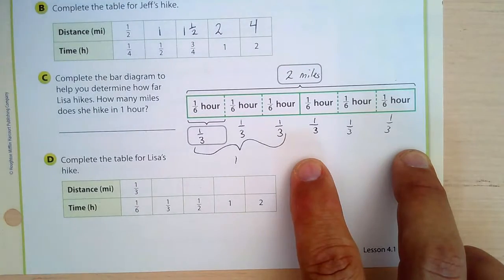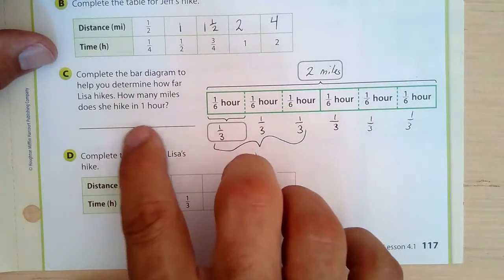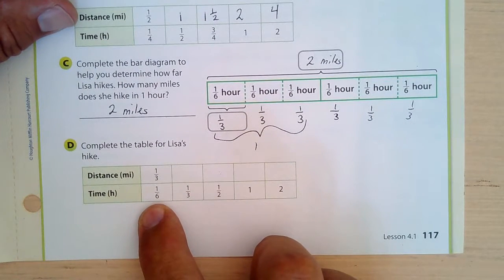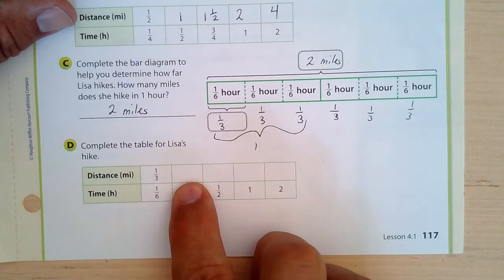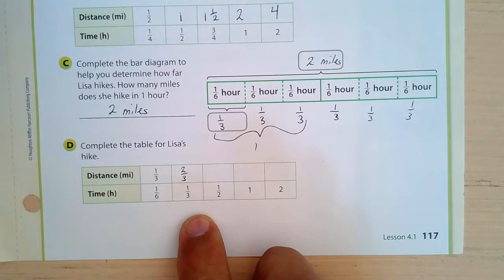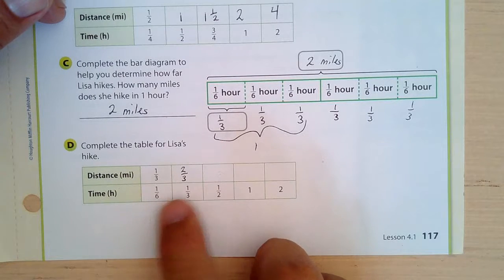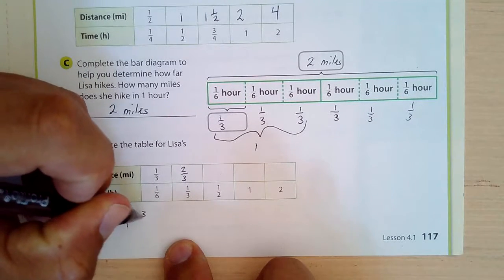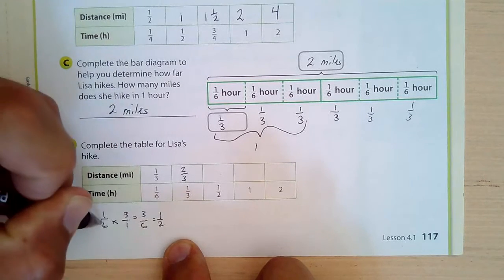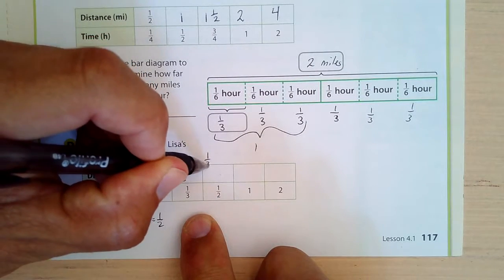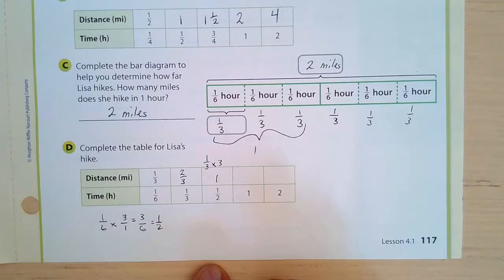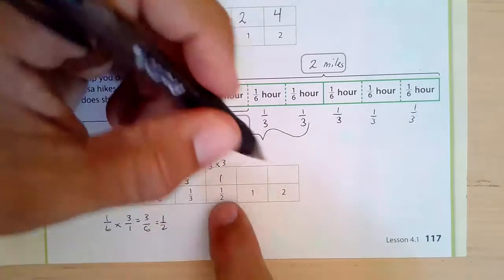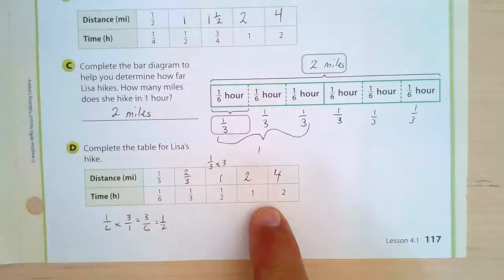Completing Lisa's table: one-sixth of an hour is one-third of a mile. Doubling gives two-sixths — one-third — and two-thirds of a mile. For one-half hour, multiply one-sixth by three to get one-half, and multiply one-third by three to get one mile. For one hour it's two miles, and doubling gives four miles for two hours.